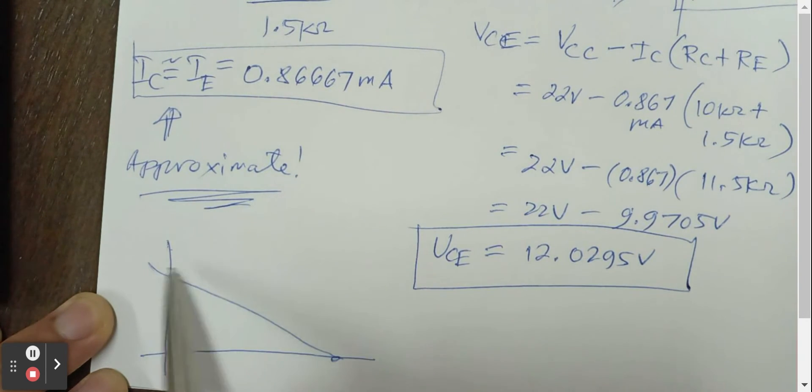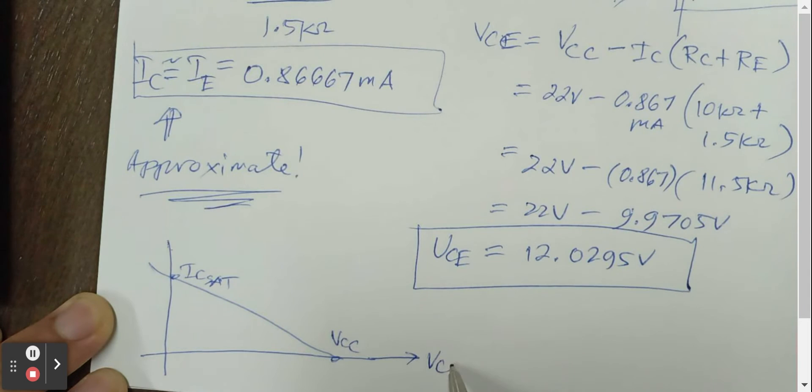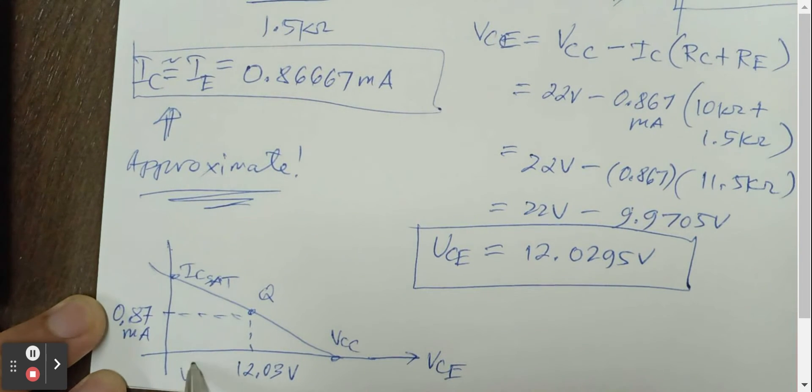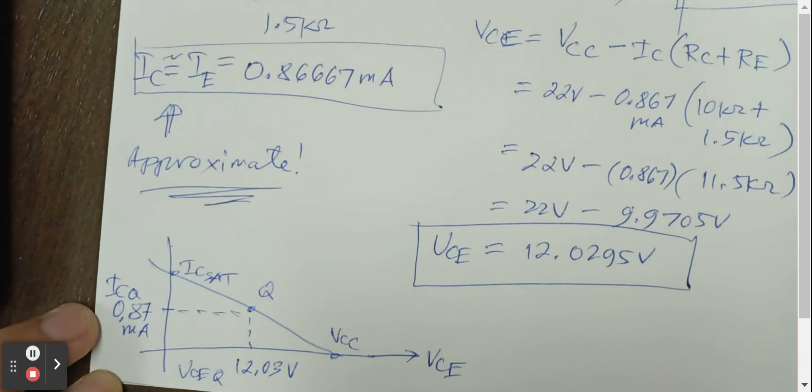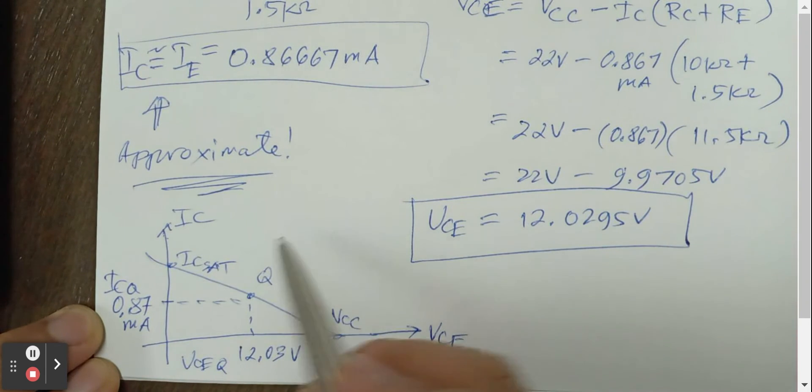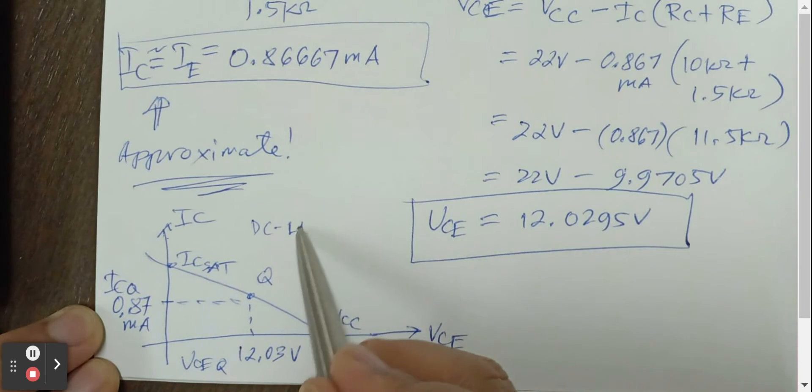We will have here Ic saturation, the Vcc along the Vce, and we have the Q point, which will be 0.87 milliamperes, and the Vceq will be 12.03 volts. This is the Vceq, and this is the Icq. And of course, this will be our Ic on the y-axis and Vce. So this is our DC load line.